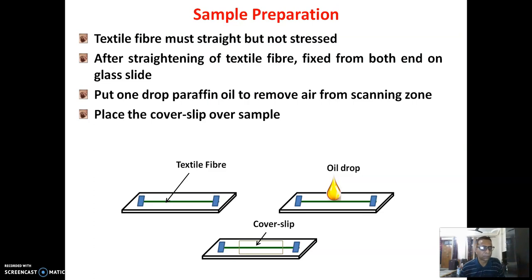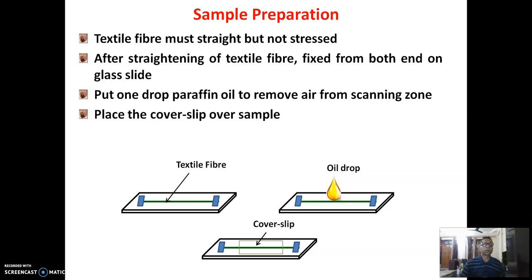Sample preparation for birefringence measurement is a tricky exercise. Textile fibers must be straight but not stressed. If the fiber is stressed, the molecular chains elongate along the direction of the applied stress and the birefringence value will change. After straightening, the fiber must be fixed from both ends on a glass slide using cellulite tape, as shown — straight but not stressed.